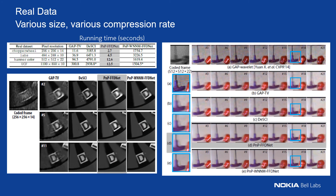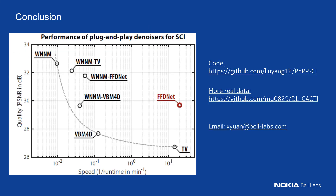Now we try some real data captured by real SCI cameras with different sizes and different compression rates. PnP-FFDNet can finish the work in around 10 seconds and the quality is comparable with DeSCI. We also compare different denoisers plugged into the PnP network — FFDNet and WNM are both shown. The code and dataset are publicly available.